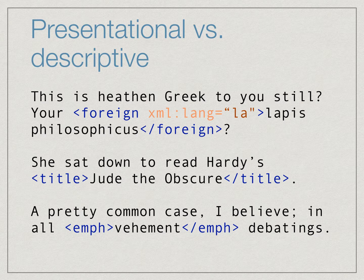Now we know why these spans of text are italicized. In the first instance, the markup indicates a foreign phrase. Moreover, the markup tells us the language of that foreign phrase. The XML lang, or language attribute, indicates that the language is Latin, using the two-letter ISO language code LA for Latin.